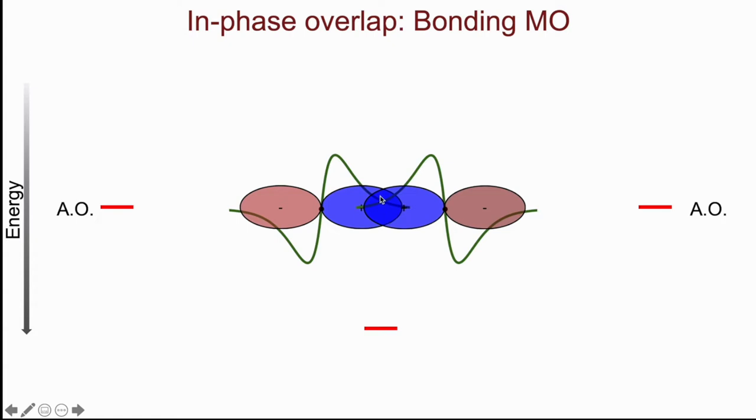The wave functions are overlapping in phase. The positive phase of this wave function is reinforcing the positive wave of this function between the two atoms. And that reinforcement gives me a resultant energy that is lower than that of the constituent atomic orbitals.